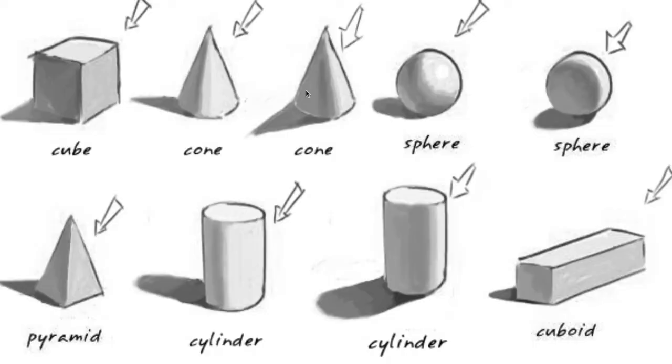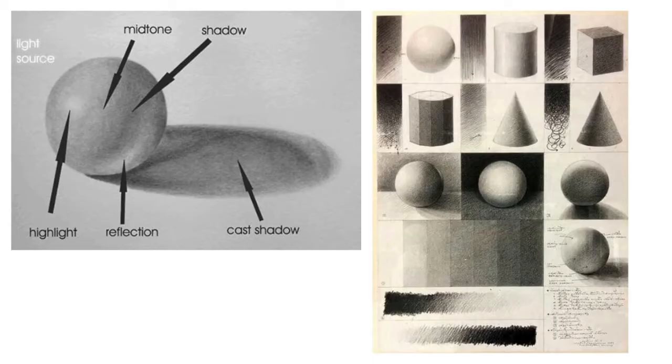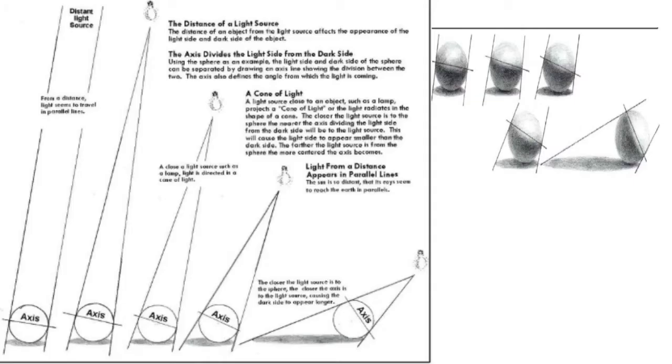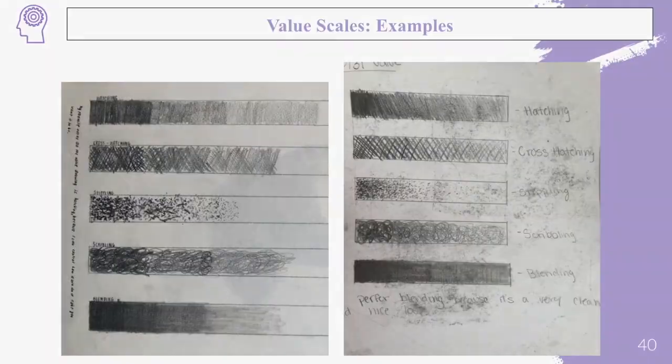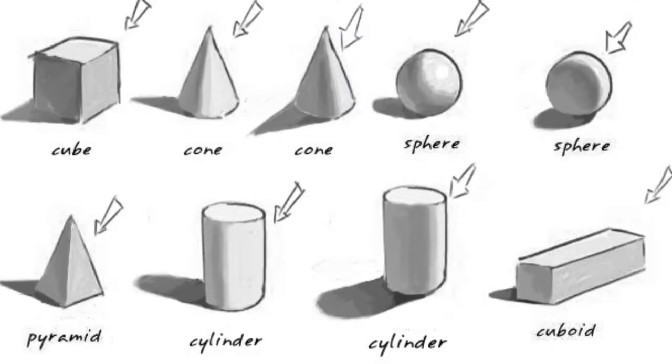And then after you do a sphere, you're also going to pick another shape. You can pick one of those shapes. You can pick one of these shapes to copy here. Okay. Sorry. I'm flipping through fast on you. So you'll pick one of these shapes.